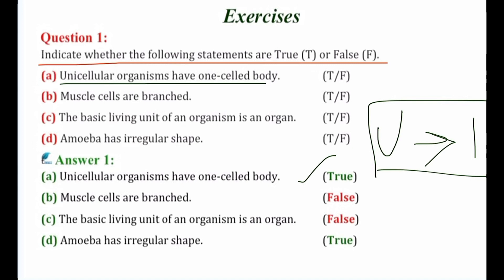We should also know the comparison between unicellular and multicellular. Multi means more than one, so multicellular organisms use many different cells to function. Part B: muscle cells are branched. The given statement is false because muscle cells are unbranched by nature.